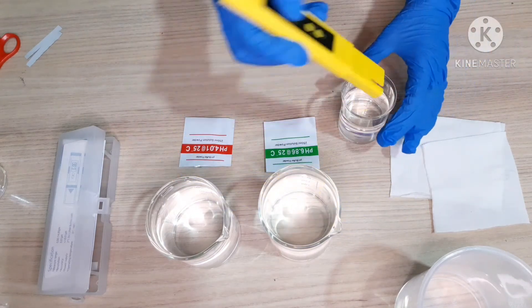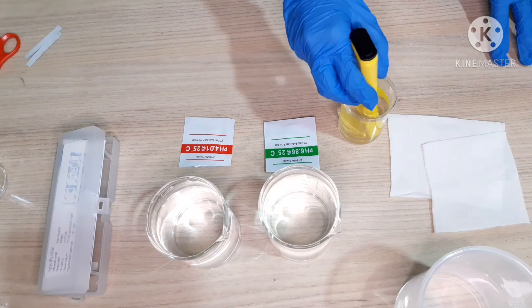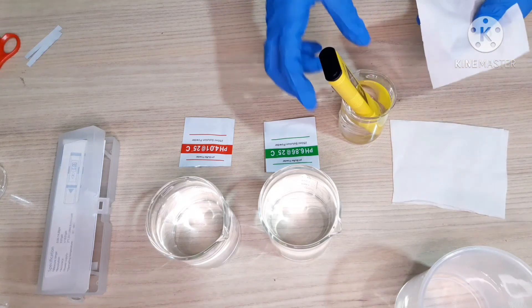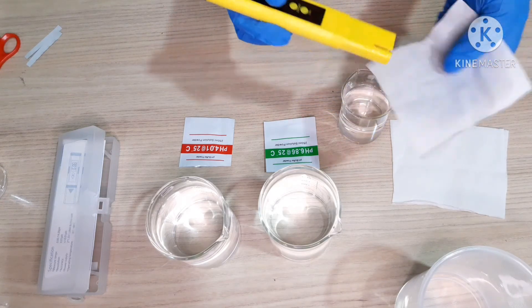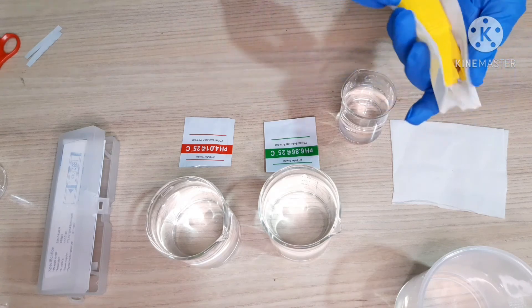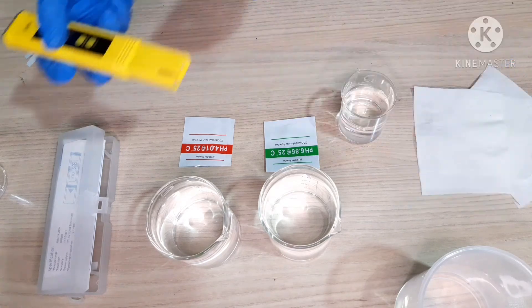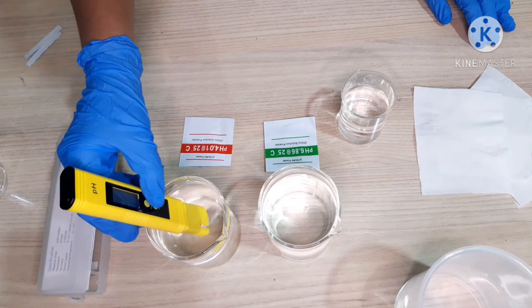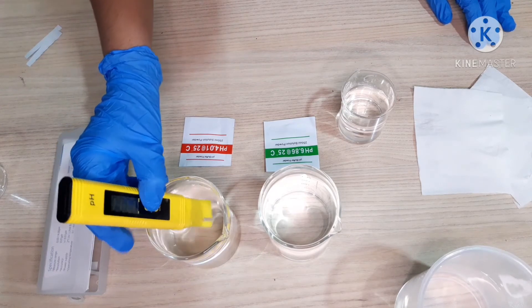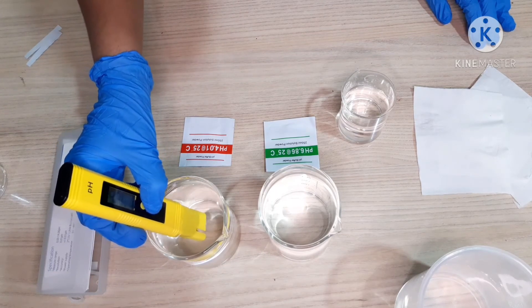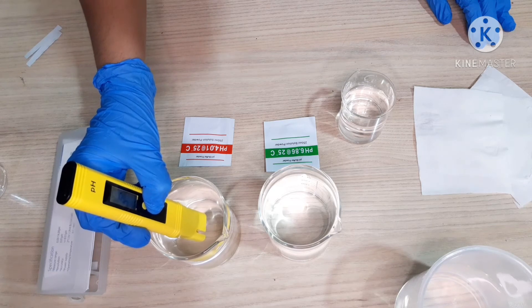I will again rinse it in distilled water. Now, I will put the pH meter in pH 4 solution. Turn it on. And now, I will press calibrate for 5 seconds.